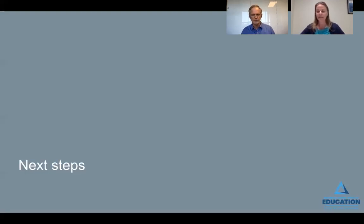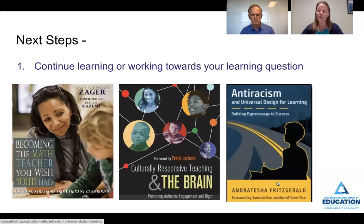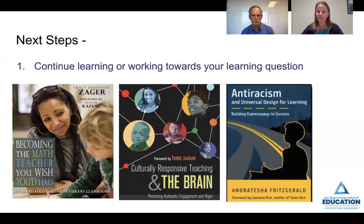We know that learning is never done, and so we would like to offer a few practical next steps. First, you can continue working towards your learning question by exploring one of the books mentioned in this session. On the far left is Tracy Zager's Becoming the Math Teacher You Wish You'd Had, great for broadening the definition of mathematics. The middle text is Zaretta Hammond's Culturally Responsive Teaching and the Brain, which supports learning around fear, honoring students and their identity, and building a collectivist culture. On the far right is Andratisha Fritzgerald's Anti-Racism and Universal Design for Learning, which supports learning on the connections between UDL and honoring students and reducing associations of fear.